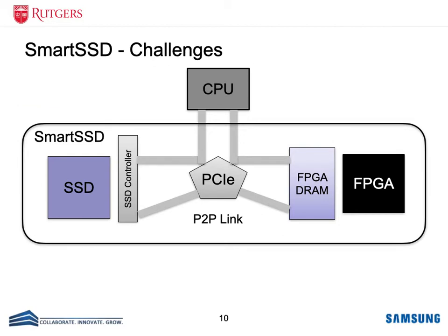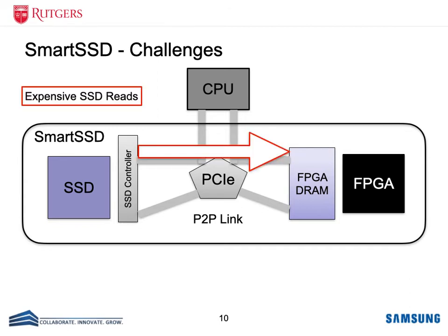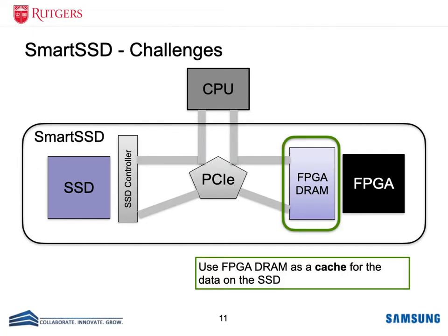Despite all these opportunities, there is one major challenge for this SSD-based recommendation system. SSD accesses have higher latency than DRAM accesses, which can impact the execution time of inference. Additionally, for the FPGA on a smart SSD to do computation, the data first needs to be brought to the FPGA's external DRAM, and then the FPGA can access the data and do the computation. I will show later how we can use this external FPGA DRAM to cache some of the frequently accessed data to address this challenge.